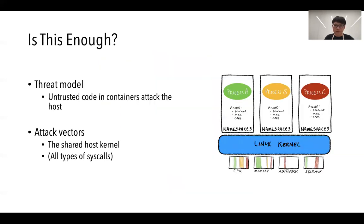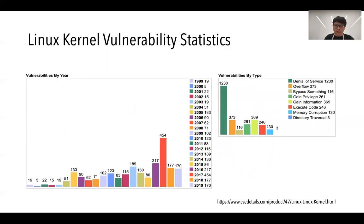However, is this enough? If we have some untrusted code in containers that tries to attack the host, all containers share the same host Linux kernel. So if one container can escape to the host Linux, all processes running on top of it can be compromised. This is not very uncommon today. As you can see in these diagrams, these are the CVEs or vulnerabilities within the current Linux kernel — over 400 CVEs in 2017 — and with some of them, containers can easily gain root privilege and have full control of the platform.